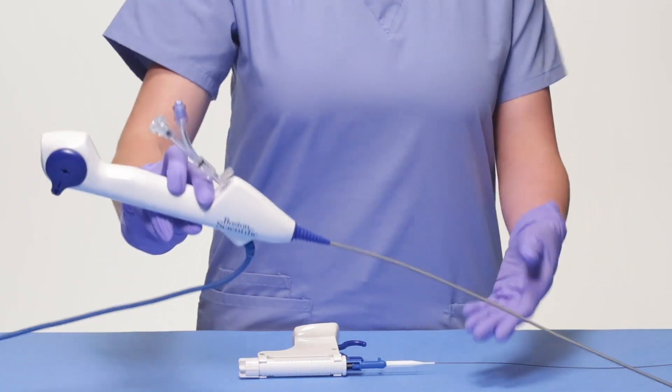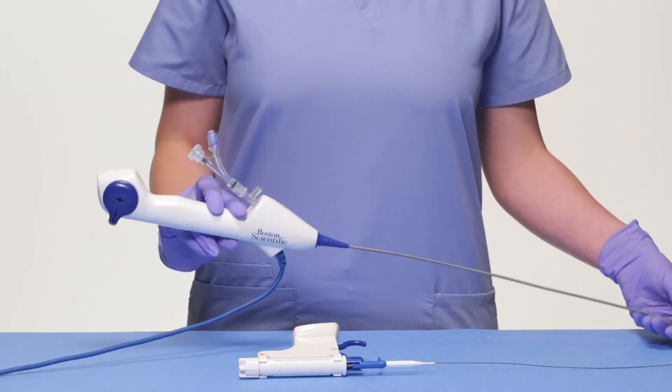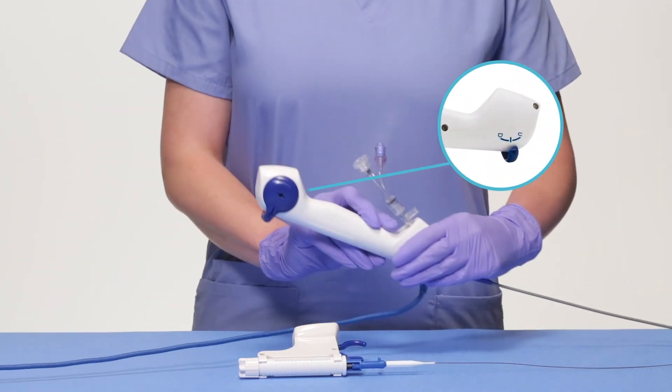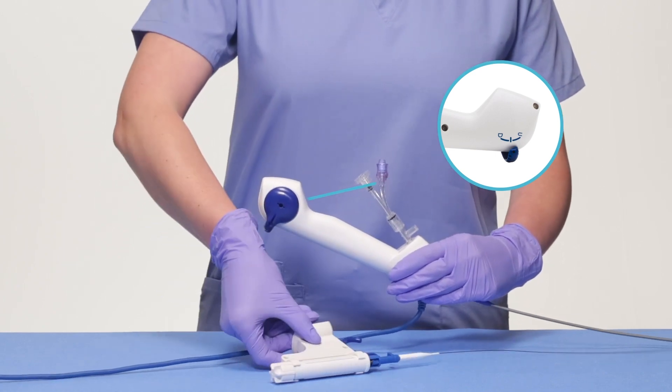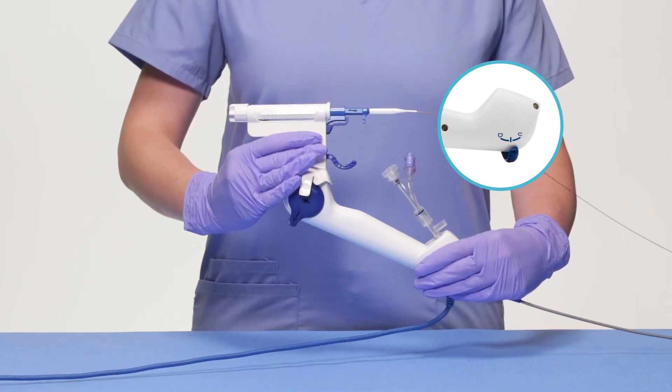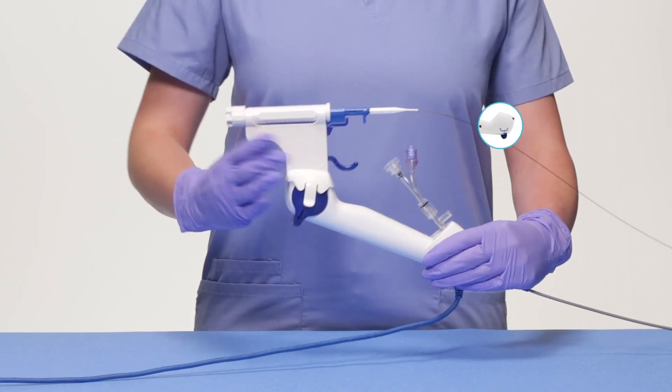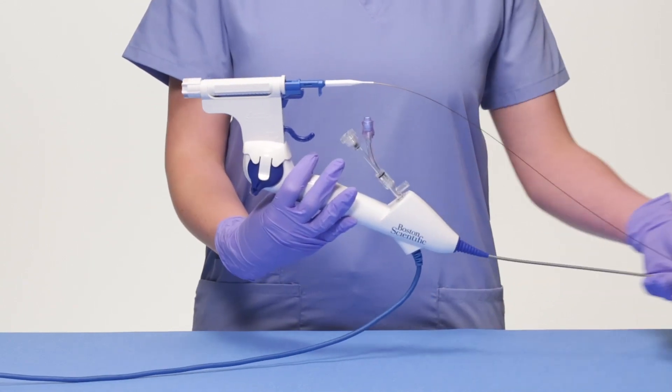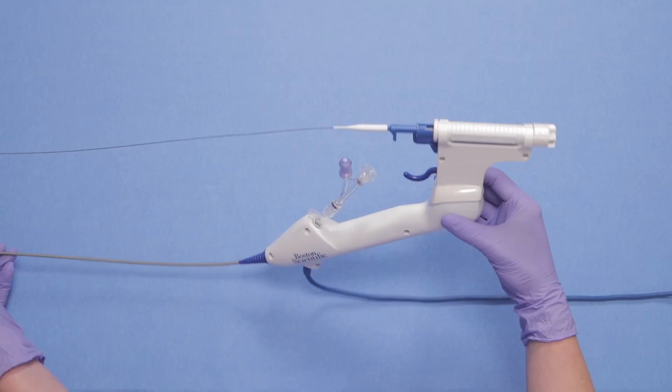To connect the LithoVue Empower device to the LithoVue ureteroscope, you must first align the pin with the DU markers on the ureteroscope. This side must be attached first for the device to function properly. When aligned correctly, pressing down will snap the device into place.